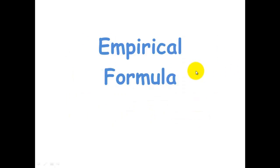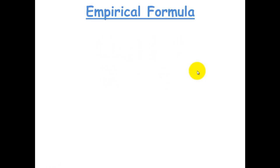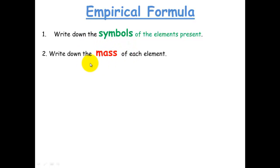What do these mean? Let's have a look at empirical formula and how we can derive the empirical formula from information that's given. There's a couple of steps involved in deriving empirical formula. The first one is to write down the symbols of the elements present. Step two is to write down the mass of each element. Now, you'll sometimes be given the mass as percentage, so just convert percentages to grams.